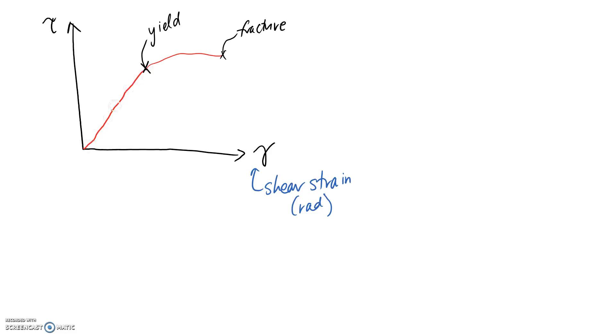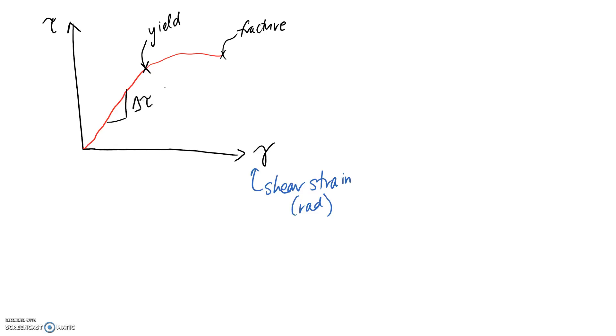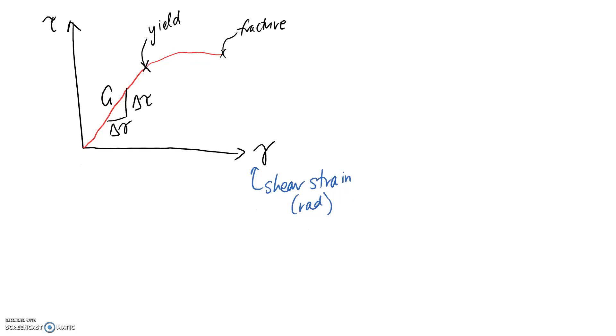Through this linear part of our graph, we can calculate the gradient of it. On the y-axis would be the change in the stress. On the x-axis is the change in the strain. And we're going to call the gradient g. So, if we want to write this mathematically, g is equal to the change in stress divided by the change in strain through this linear or elastic region.